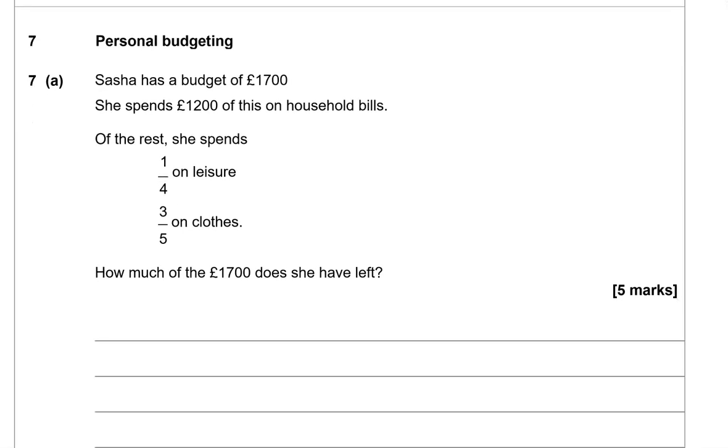Personal budgeting. Sasha has a budget of £1,700. She spends £1,200 of this on household bills. Of the rest, she spends one quarter on leisure, three fifths on clothes. How much of the £1,700 does she have left? So to work out the rest, we're going to first do 1,700 take away £1,200, which gives us £500.